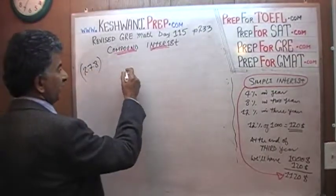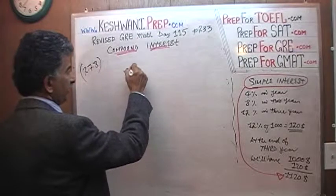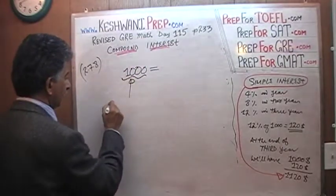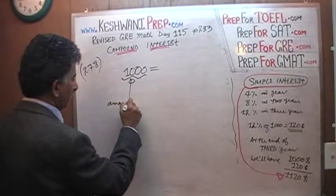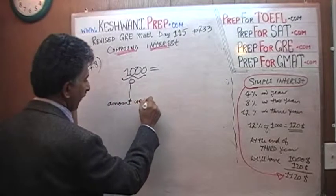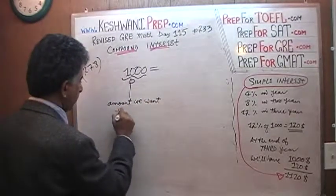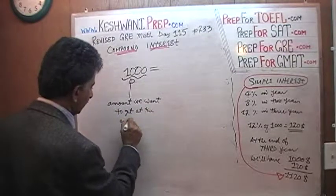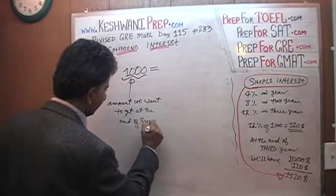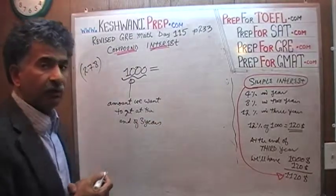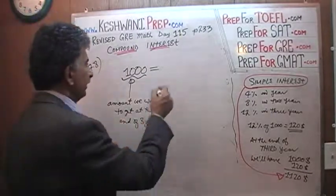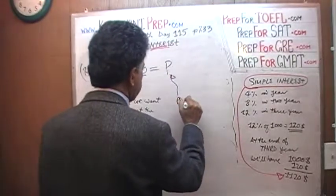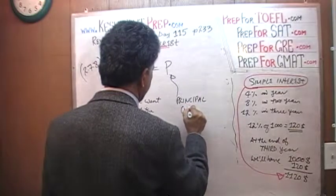and I'm going to keep my money for a 3 year period. So, the amount of money that I want to get at the end of 3 years is already determined. This is what I want to get, this is the amount we want to get at the end of 3 years. The question is, how much should we invest, that's your P, that's the principal, and that's the unknown here.